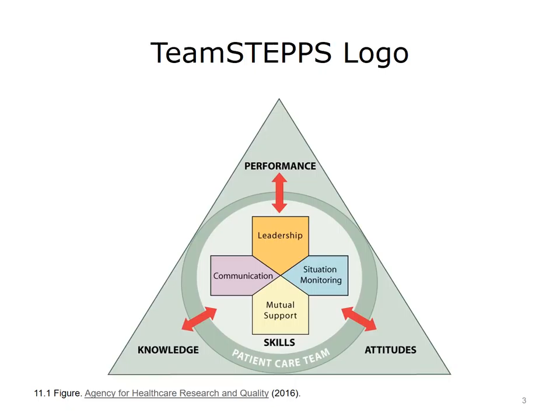In the TeamSTEPPS model, the red arrows reflect the interplay of outcomes and skills that form the basis of a team striving to deliver safe, quality care. In our example, the red arrows would represent the interaction between the skills of a team and the outcomes strived for in regards to a high-performing health IT team.